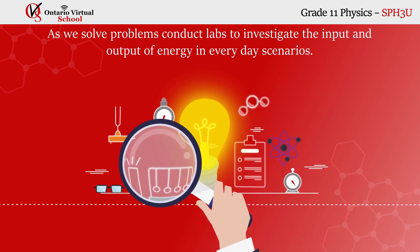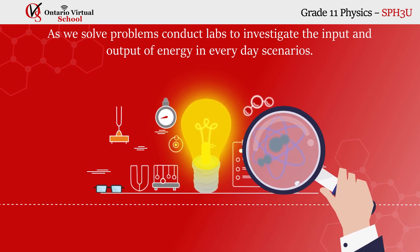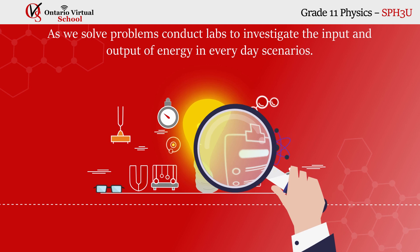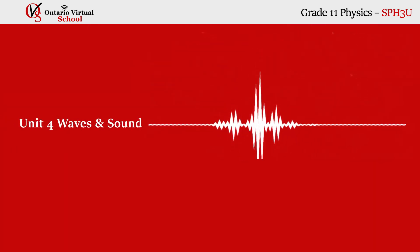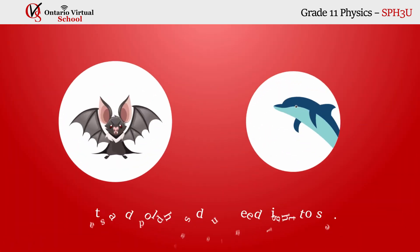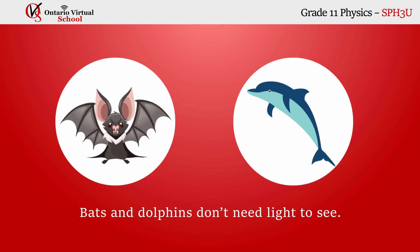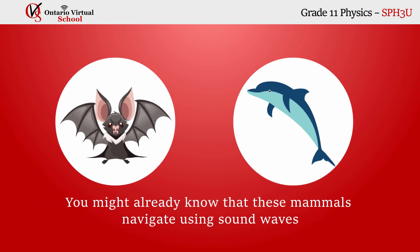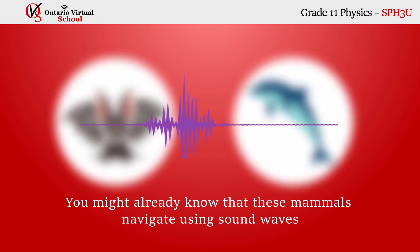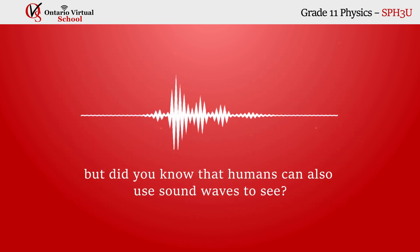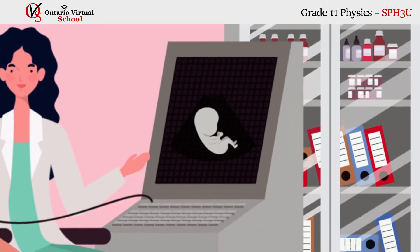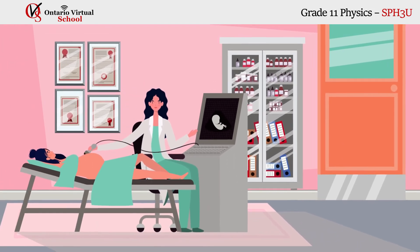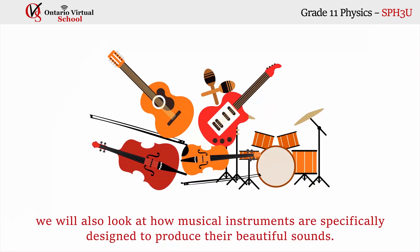In this unit, we will learn all about the different forms of energy and energy transformation as we solve problems and conduct labs to investigate the input and output of energy in everyday scenarios. Unit four: waves and sound. Bats and dolphins don't need light to see — these mammals navigate using sound waves. Humans can also use sound waves to see; doctors use ultrasound waves to see things within our bodies. We will also look at how musical instruments are specifically designed to produce their beautiful sounds.